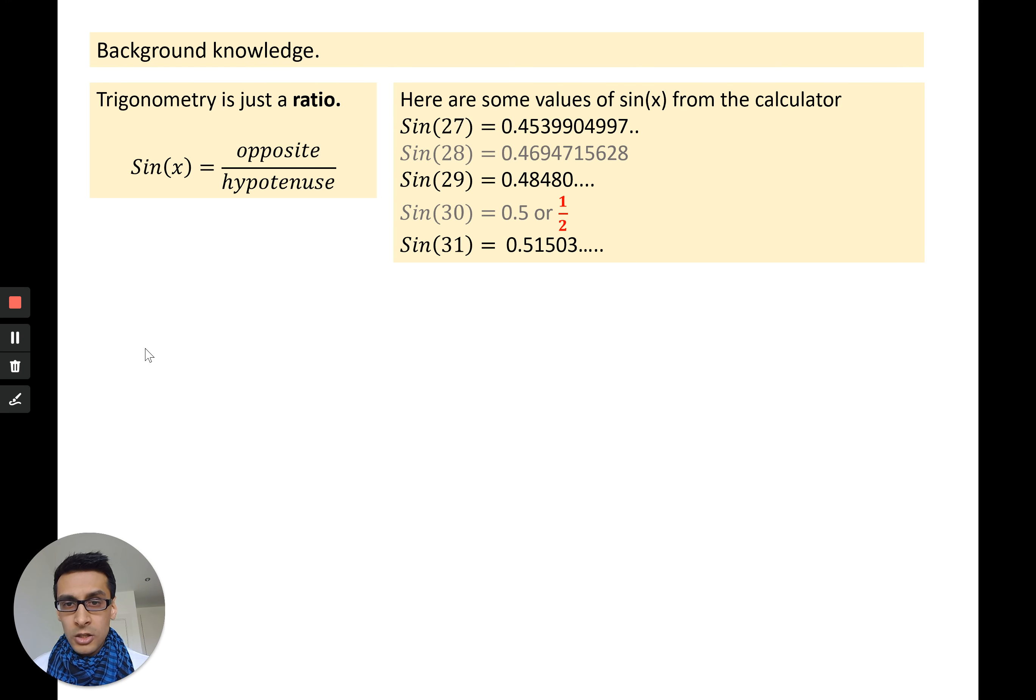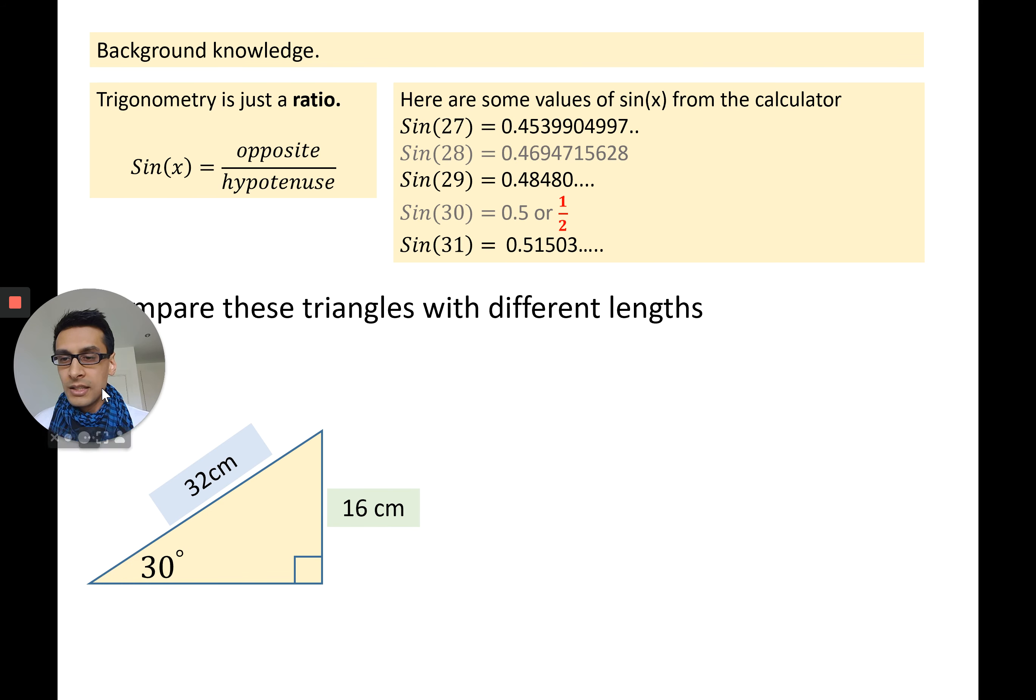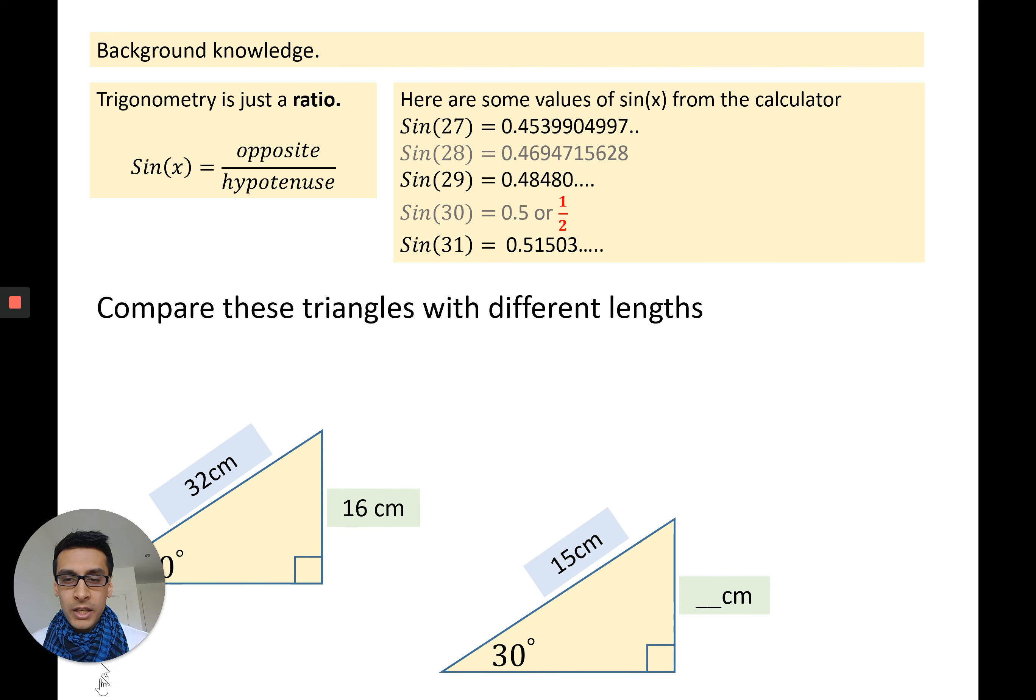We can use those nice numbers, especially if the angle is a nice angle like 30 degrees in this case. We can then do trigonometry without a calculator. In this case, for example here you can see the angle is 30 degrees, we're using sine. So the opposite side is 16. That must mean that the hypotenuse is 32 because it's a one to two ratio, one over two.